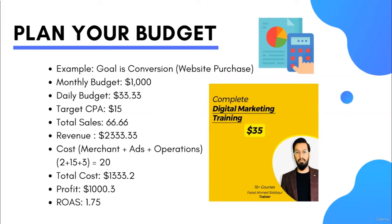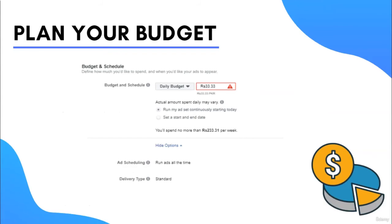Facebook Ads Manager also calculates ROI and web ROI, but to have accurate costing you need to incorporate unit cost calculations to identify the real value. I am attaching a Facebook Ads profit calculator file — please refer to it for better understanding. In Facebook Ads there is a budget and schedule section where advertisers can set a daily budget, lifetime budget, or schedule the budget.